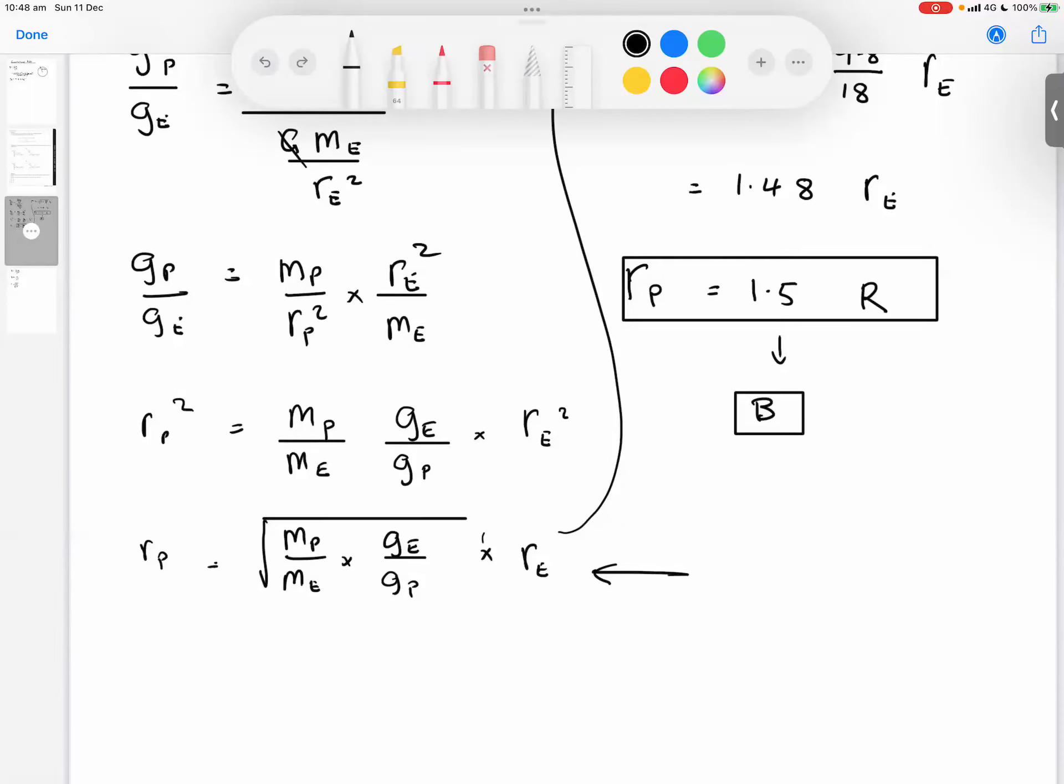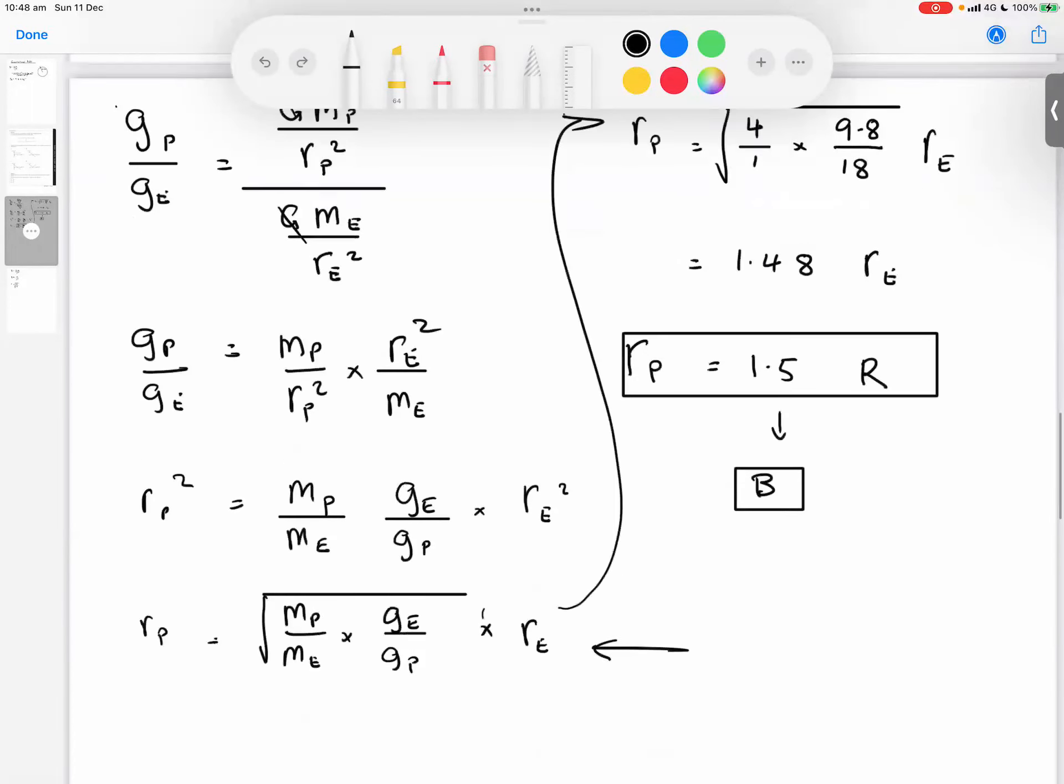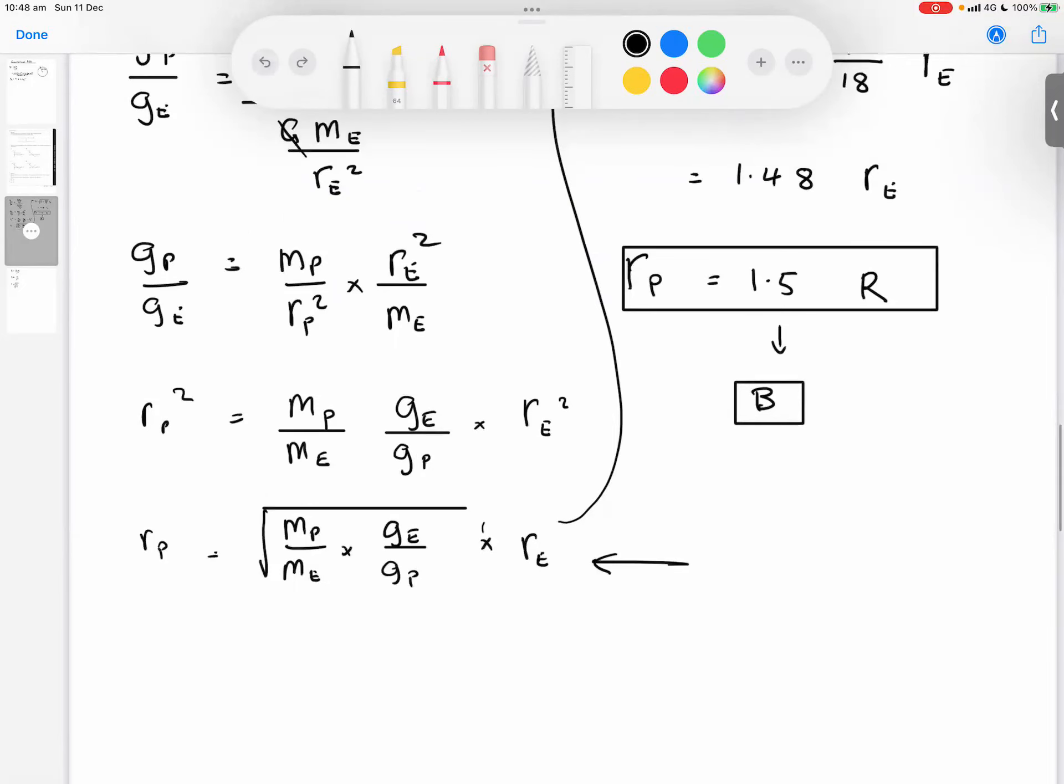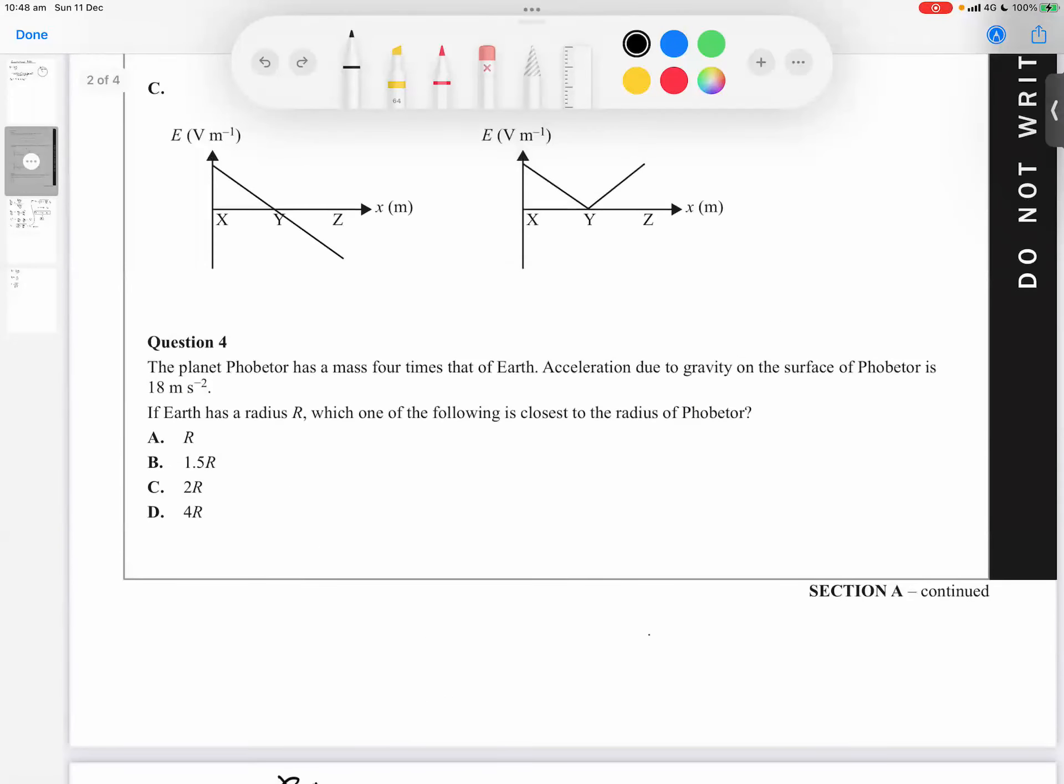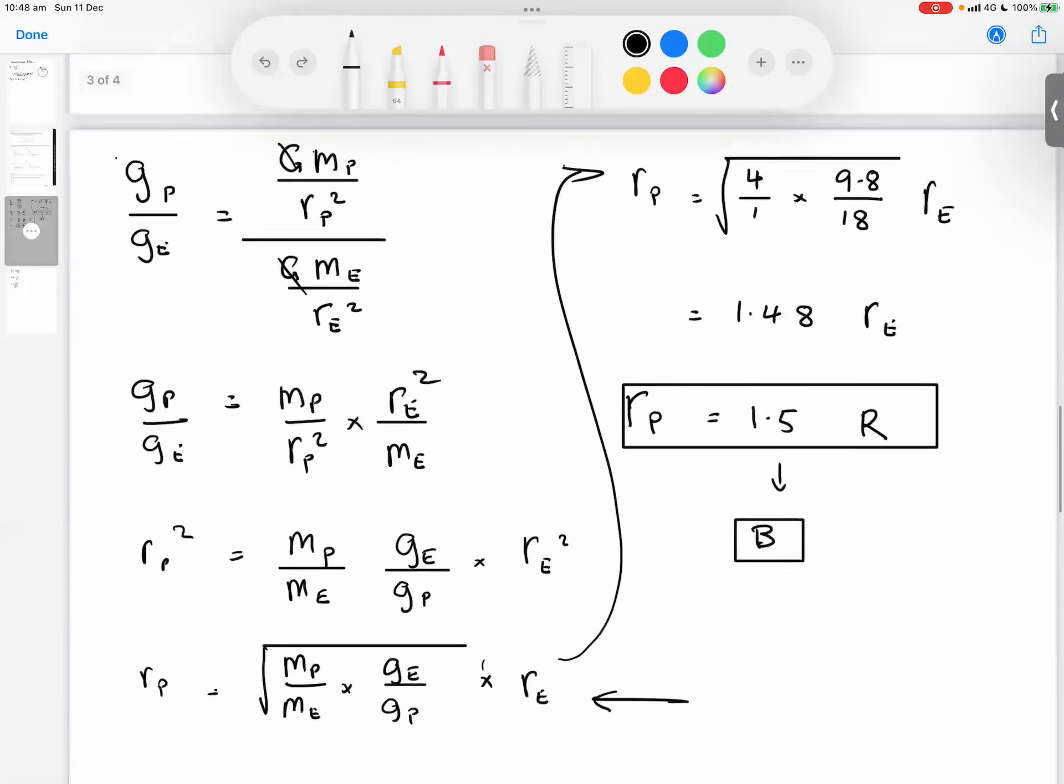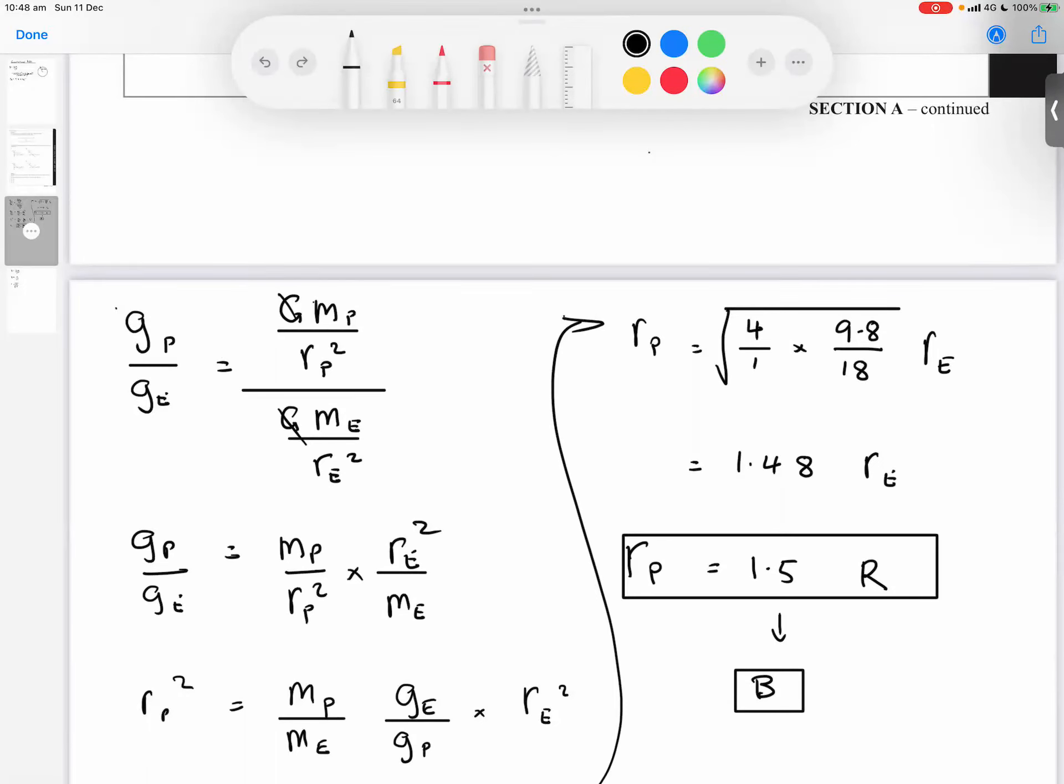It's a bit of work to get that algebra done, particularly in the context of an exam. But the ratio of the masses we were told was four, and the inverse ratio of the gravitational fields—well, earth is 9.8 and we were told that Phobitor has a value of 18. If you put that all into your calculator, we get that the radius of Phobitor is 1.48 times the radius of earth given all the other information we were told, and that's approximately equal to 1.5, which is closest to option B. That's one way of doing it—the ratio approach.